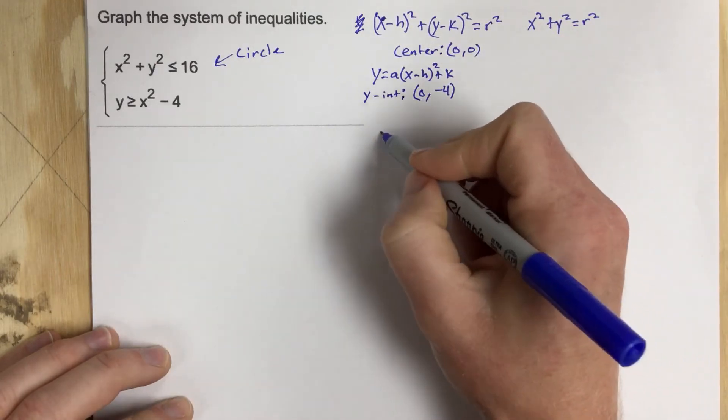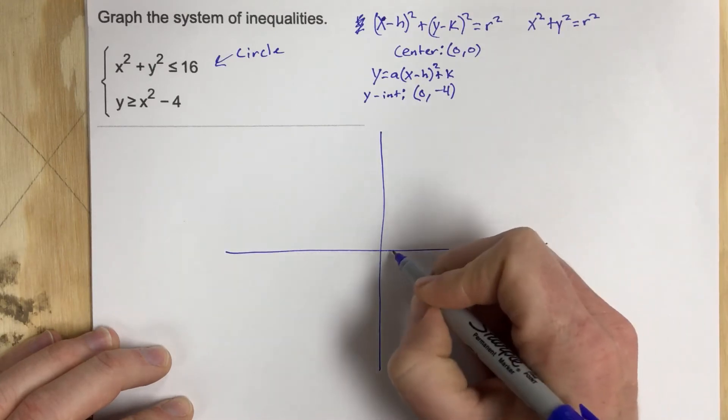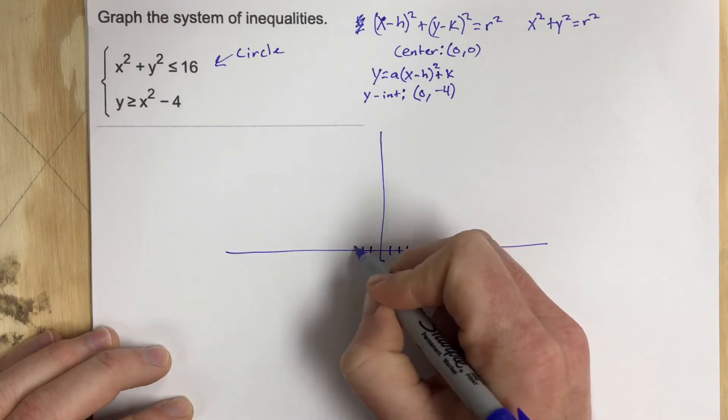All right, let's go ahead and start graphing. So I'm going to say 1, 2, 3, 4, marking the axes in each direction.